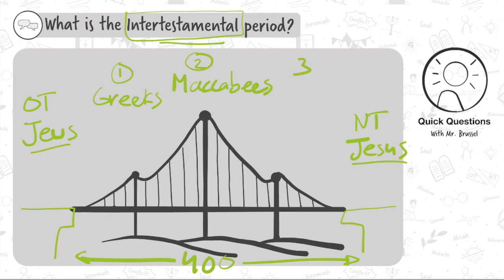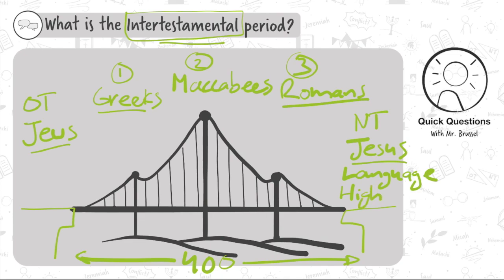The third group is the Romans. About 50 years before Jesus was born, the Romans came into Israel and conquered that nation. Where the Greeks brought language, the Romans built fast highways. So by Jesus's time, there was one language that almost everyone spoke and super fast highways.